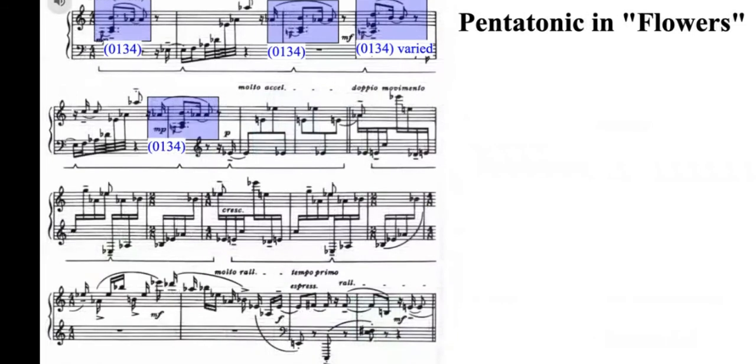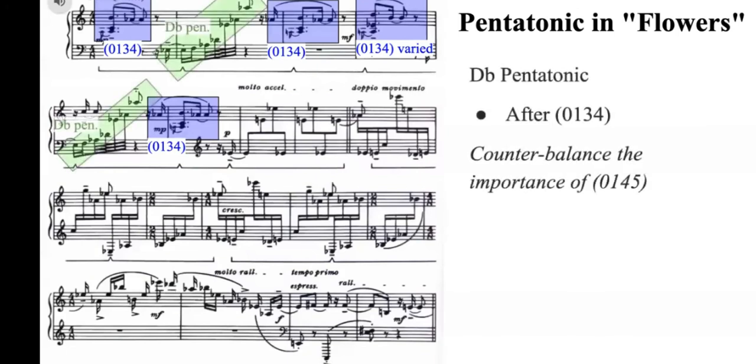In the final movement Flowers, pentatonic elements have been given the most importance among three movements. The recurring arpeggiated motifs, which suggest the features from the Db pentatonic scale, occur after the compressed 0145, which is 0134.